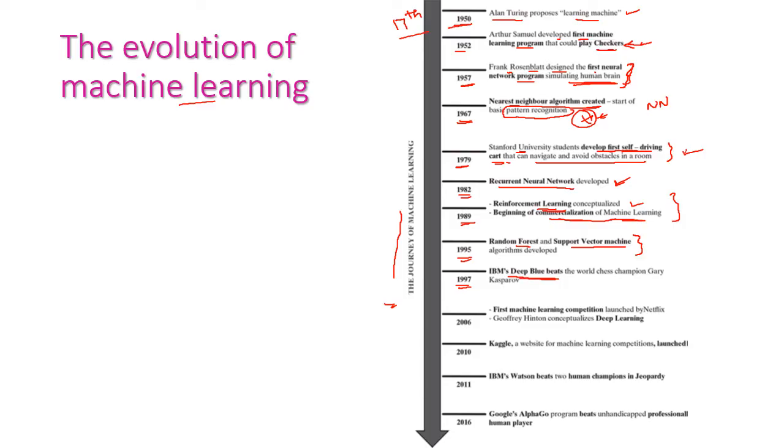In the year 2006, the first machine learning competition was launched by Netflix, and deep learning was also introduced in the year 2006 only. In the year 2010, a website for machine learning competition was launched. The next year, 2011, IBM Watson beats two human champions in Jeopardy. In the year 2016, Google's AlphaGo program beats the professional human players. These are the journey of machine learning.